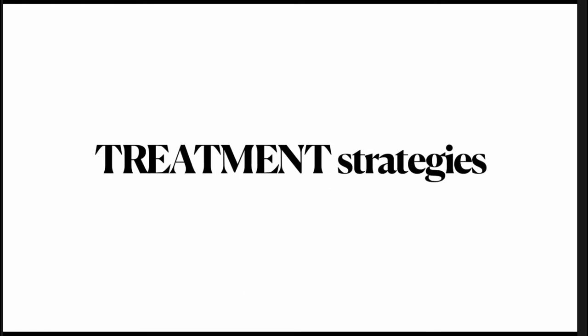Until recent years, the Triple-H therapy — hemodilution, hypervolemia, and hypertension — was the initial treatment for vasospasm. It was based on Poiseuille's equation, where changes in pressure are directly related to volume and inversely to viscosity. Reducing viscosity by hemodilution and increasing volume through hypervolemia was thought to reduce vasospasm. However, Triple-H therapy is no longer considered adequate because of significant side effects including pulmonary edema, hyponatremia, and myocardial complications, and randomized studies showed that hemodilution decreases global cerebral blood flow and oxygen delivery.